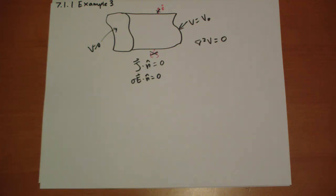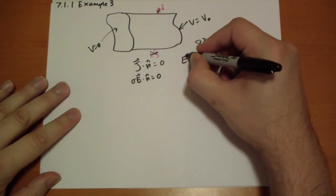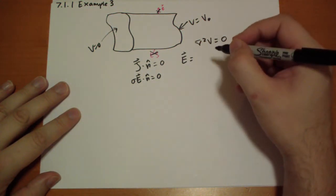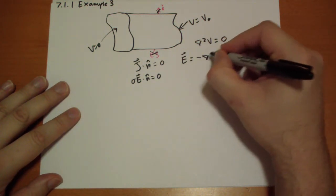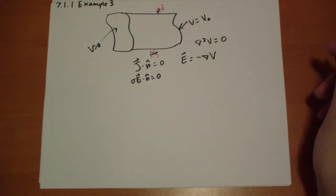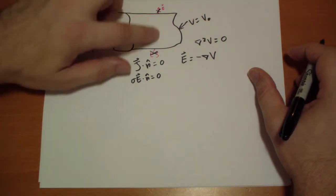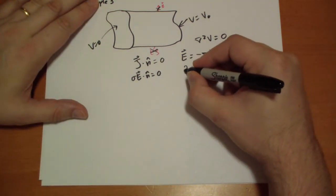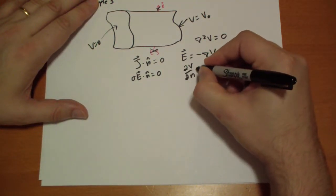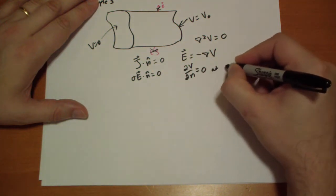This implies, because of the rule that the E vector is equal to the gradient of the potential, this implies that the derivative of the potential at this boundary is equal to zero as well. So dV by the normal is equal to zero at the edge as well.